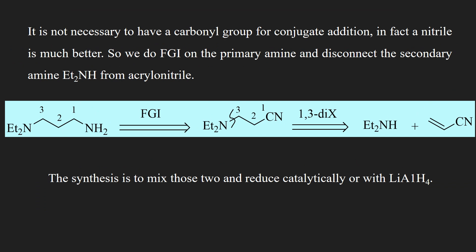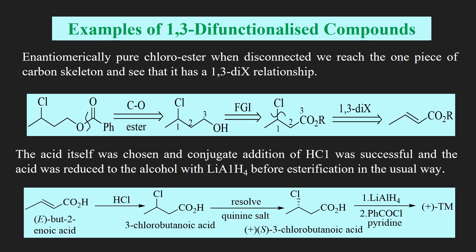Suppose if we don't have a carbonyl group and neither do we have any oxygen-based functionality, as in the diamine. It is not necessary to have a carbonyl group for conjugate addition. In fact, any electron-withdrawing group such as nitrile here is much better. So we do FGI: we convert CH2NH2 into cyanide or nitrile. We do FGI on the primary amine and disconnect to get cyanide and amine from acrylonitrile. The synthesis is to mix the two and reduce catalytically or with lithium aluminum hydride. Here are examples of 1,3-di-X functionalized compounds.